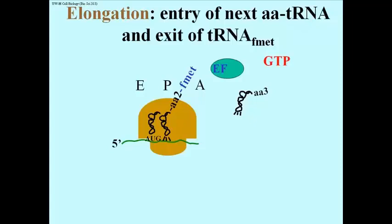Here we have the next amino acid, amino acid 3, bound to its tRNA. Again, it requires that elongation factor bound to GTP, and as the third amino acid tRNA enters this complex now after the translocation, the GTP is hydrolyzed to GDP and inorganic phosphate again.